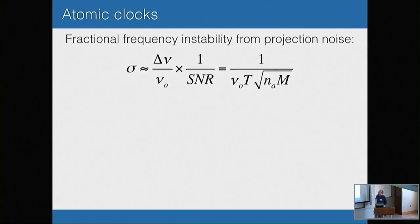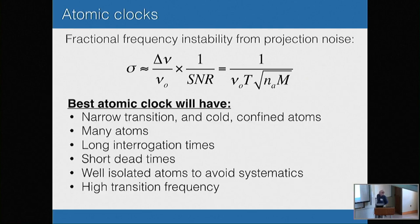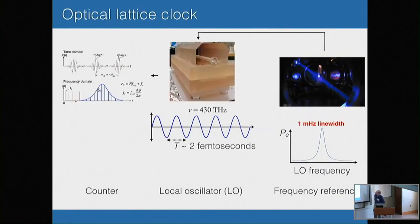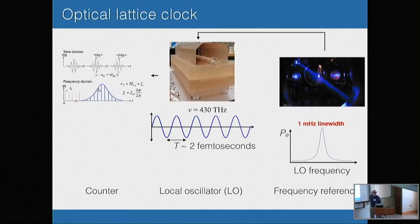From that, you can very easily write down an equation for the best performance of an atomic clock when you're limited by quantum projection noise. This is a nice recipe for a good atomic clock: you want a narrow transition and cold, confined atoms that you can probe for long times; you'd like many atoms and short dead times; and you'd like a high frequency transition. This motivates moving from rubidium and cesium microwave clocks to optical clocks with optical transitions, which offers a boost by a factor of 10 to the 5. You go from a microwave local oscillator to a laser, and your frequency reference is now an optical transition in one of these group-2 atoms.